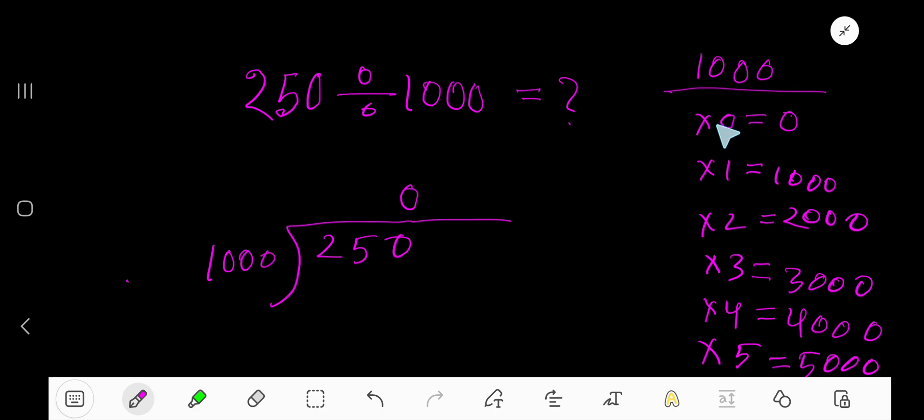Then 0 times. 0 times 1000 is 0. If you subtract, then you are getting the same number. To continue this process, take a decimal and you can take any number of zeros. Bring down the first 0. But before this 0, there is a decimal. Decimal must come to the quotient.